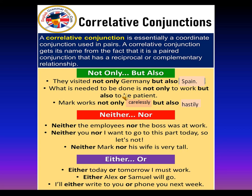More examples with 'neither… nor': 'Neither you nor I want to go' and 'Neither Mark nor his wife is very tall.' The last set of correlative conjunctions is 'either… or,' which must also be used together: 'Either today or tomorrow I must work,' 'Either Alex or Samuel will go,' and 'I'll either write to you or phone you next week.' These conjunctions always have to be used in pairs — you can never separate them.